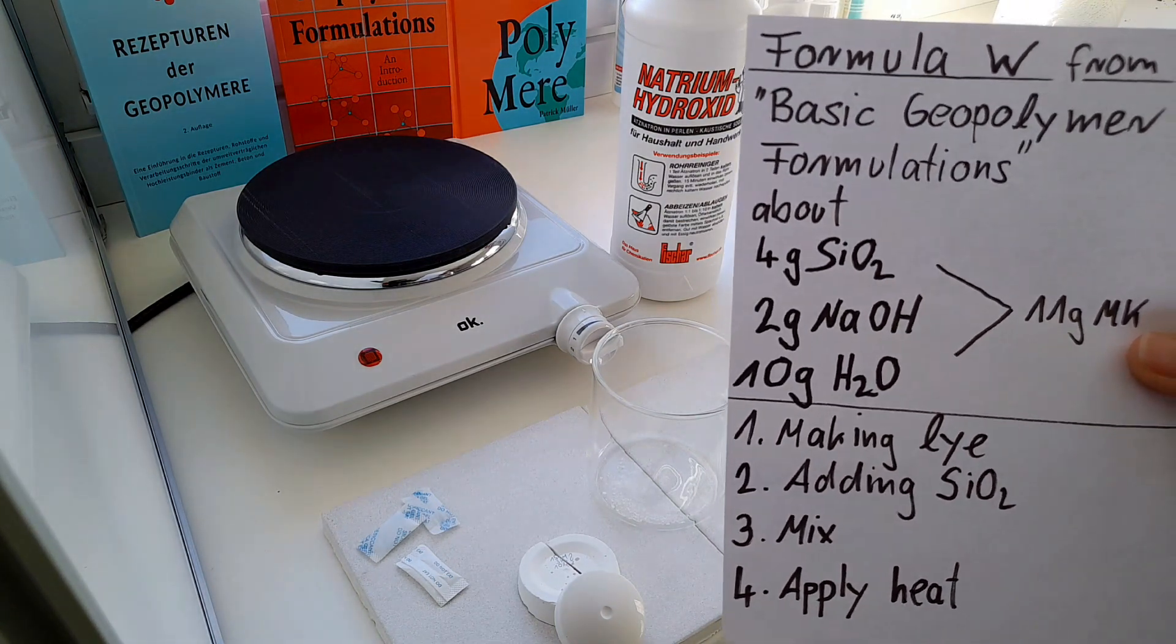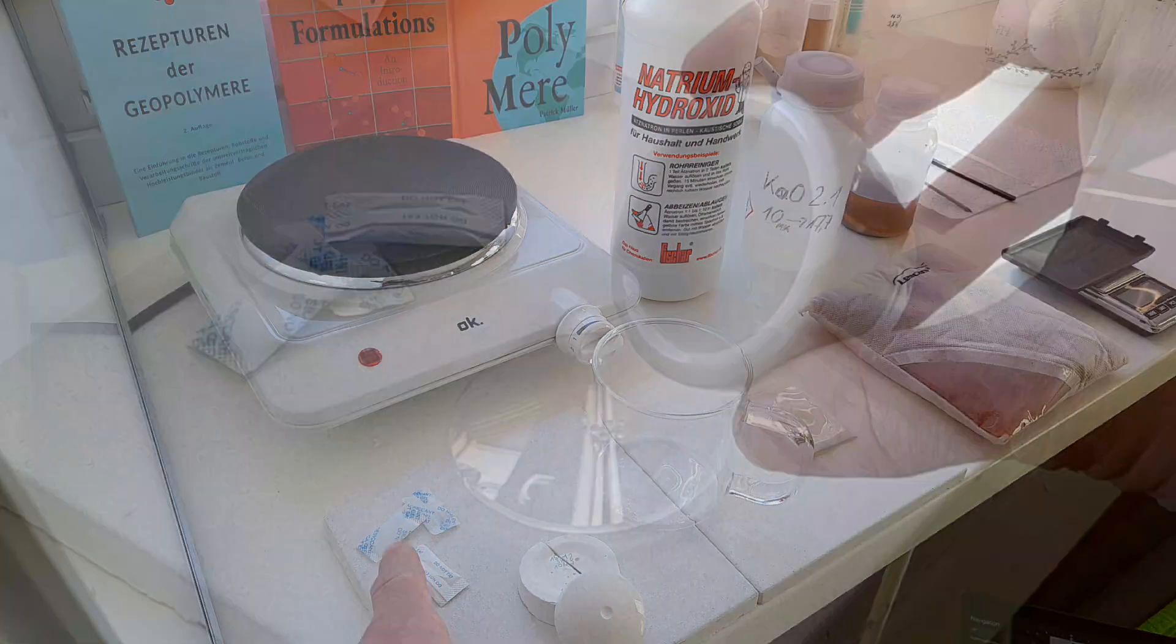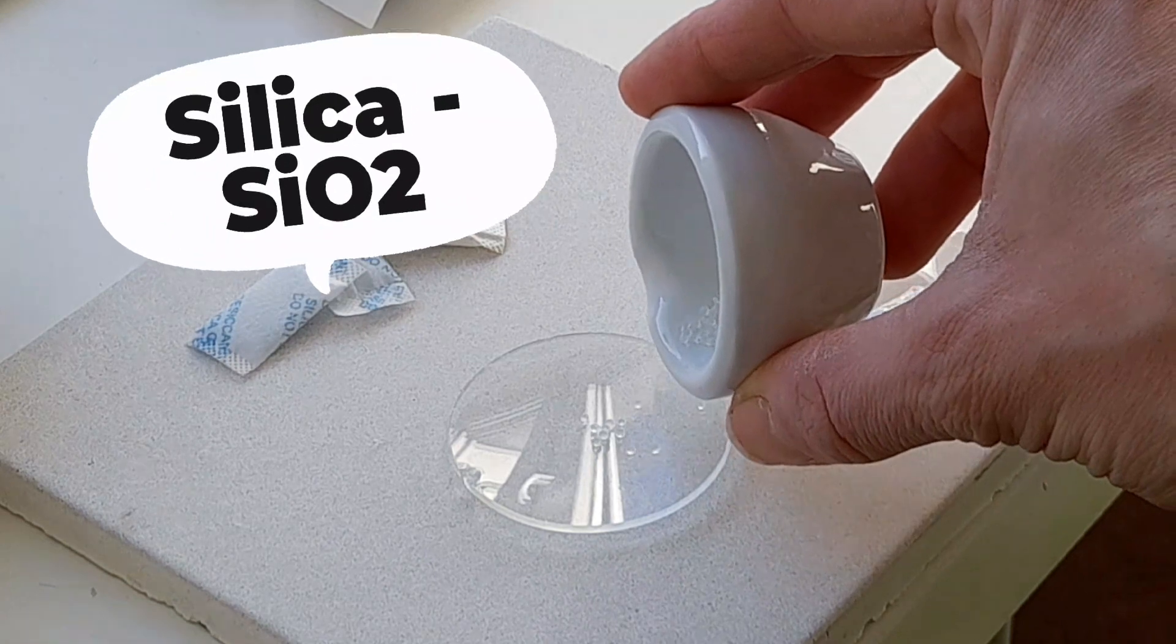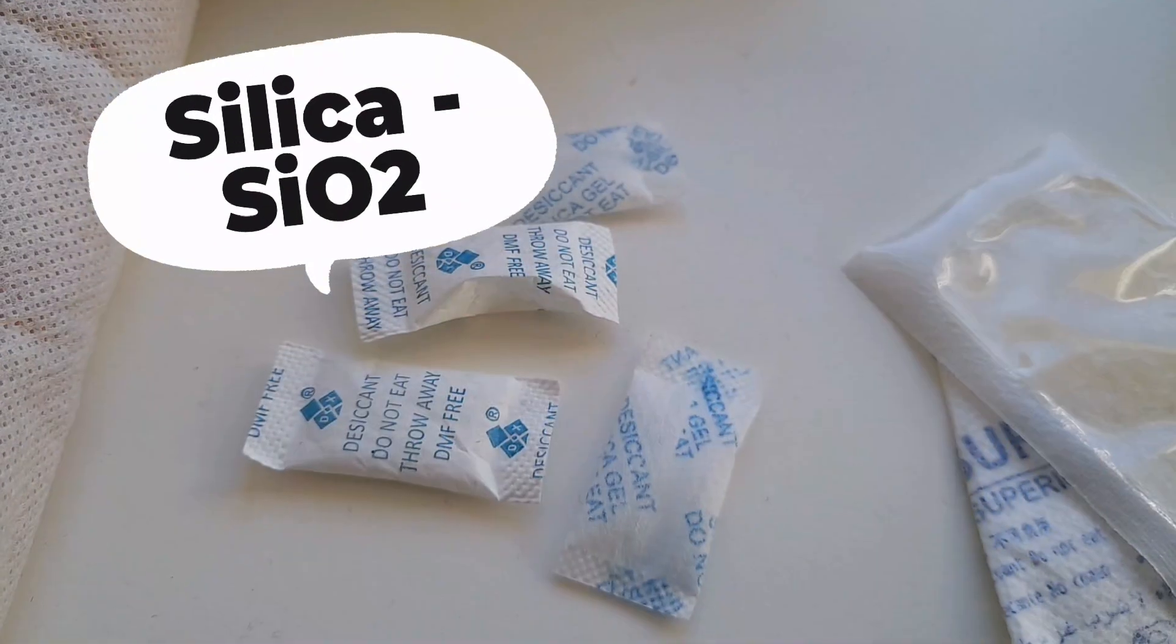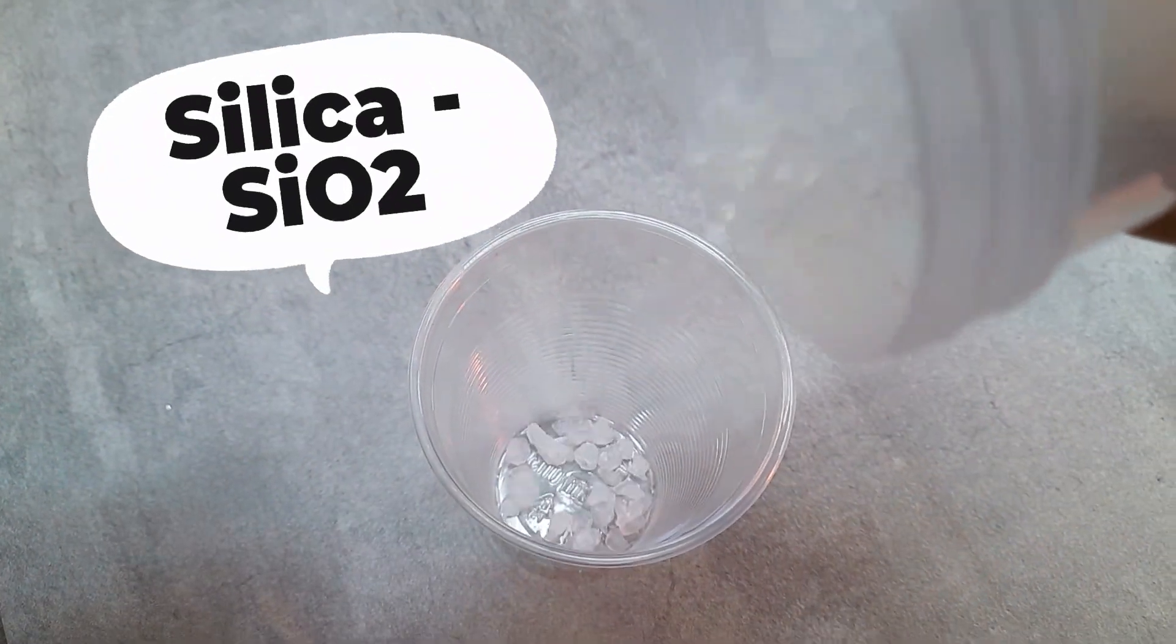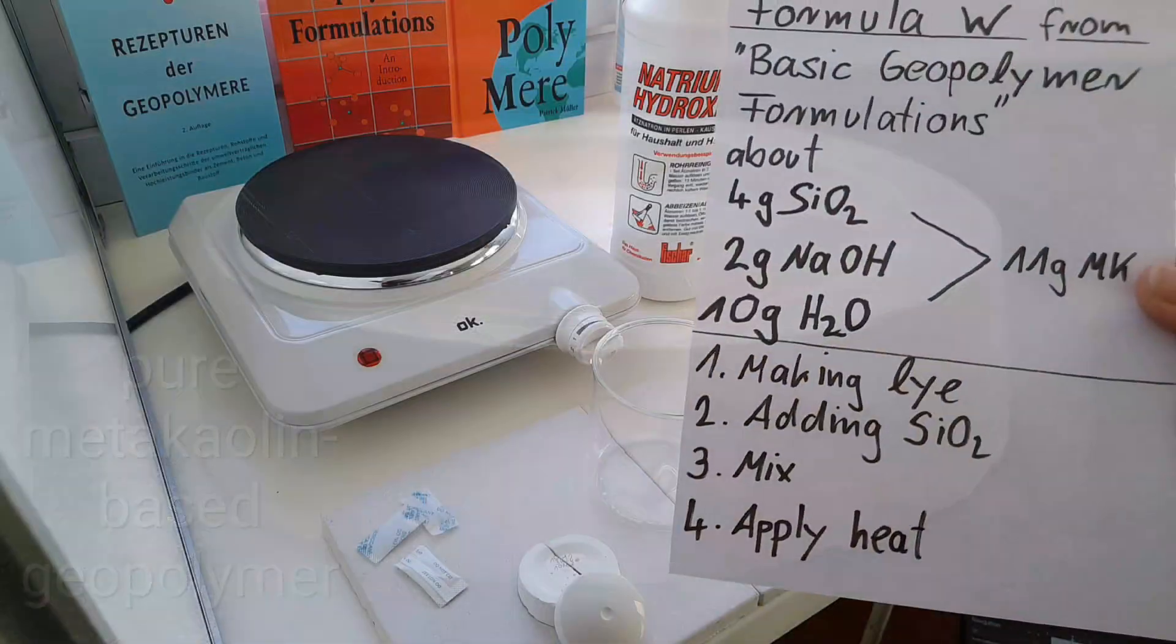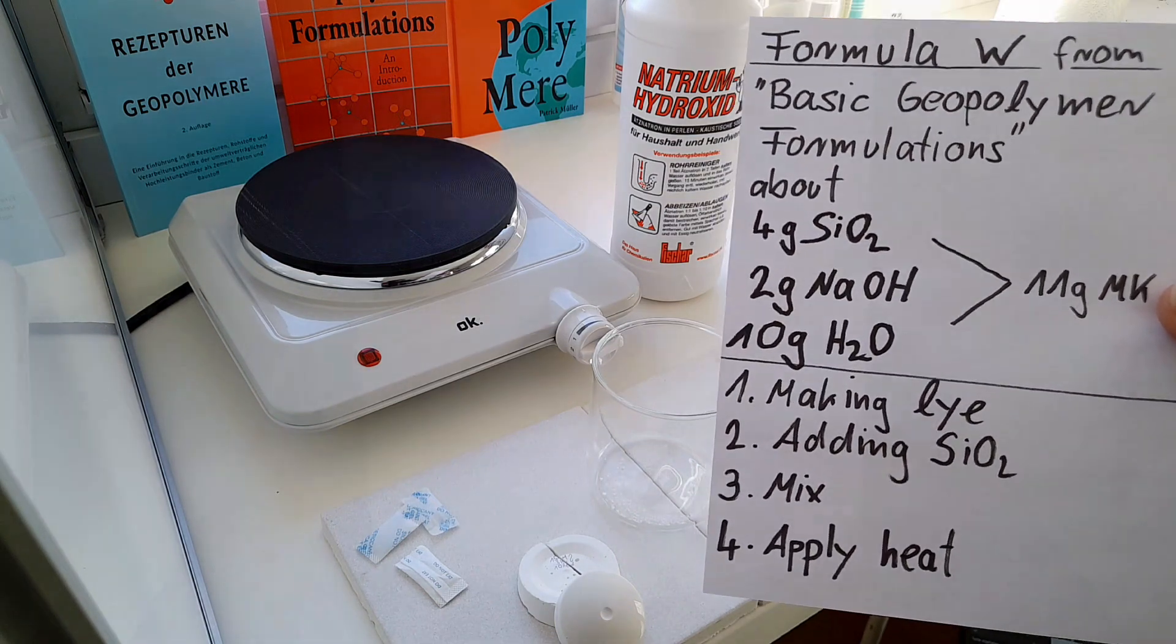Basically in this video, we dissolve leftover silica gel in a mixture of water and sodium hydroxide, so lye. What comes out is a hardener solution or activation solution for a basic geopolymer metakaolin-based cement, also known as geopolymer binder.